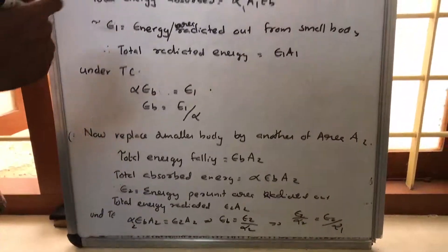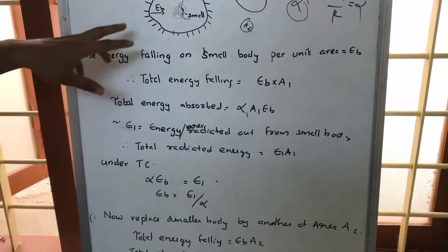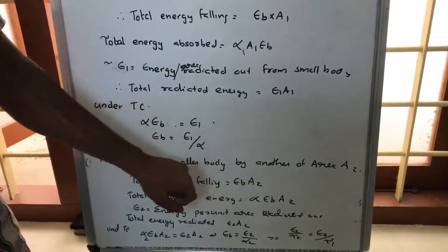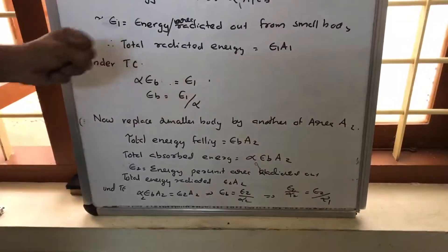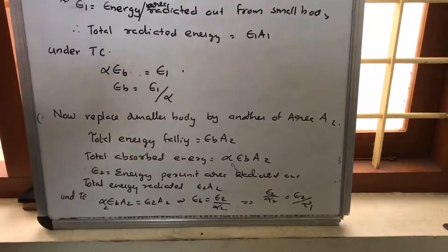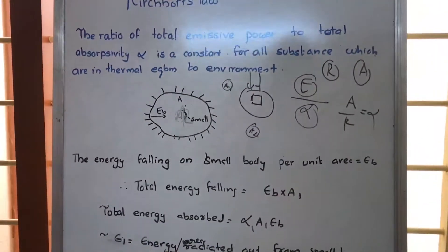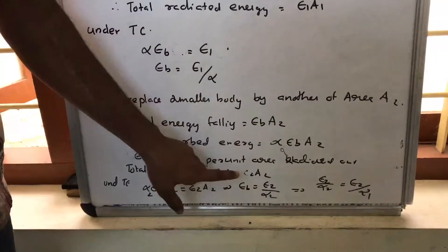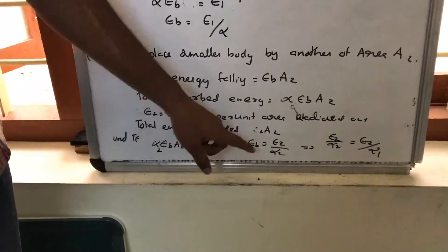Now suppose this material is replaced by another material of area A2. The energy falling per unit area is still Eb, so total energy falling is Eb times A2. Alpha2 is the fraction by which it absorbs, so alpha2 times A2 gives the amount of heat absorbed. Let E2 be the energy radiated per unit area by body A2, so total energy radiated out is E2 times A2. Under thermal equilibrium, alpha2 times Eb times A2 equals E2 times A2. Cancelling A2, we get Eb equals E2 divided by alpha2.